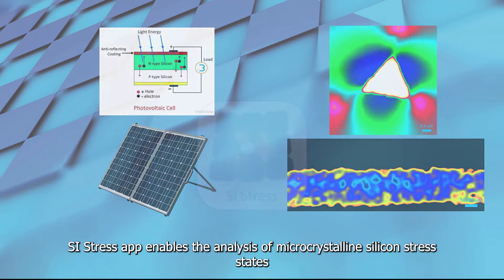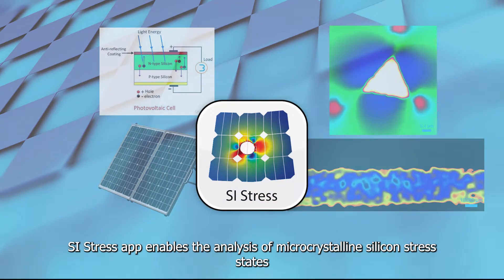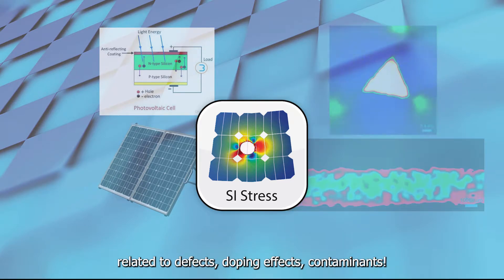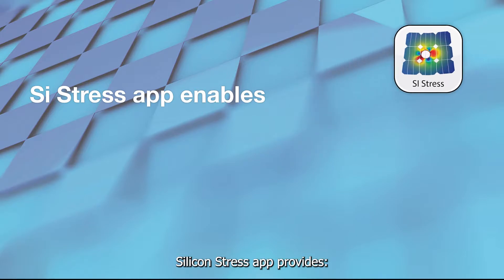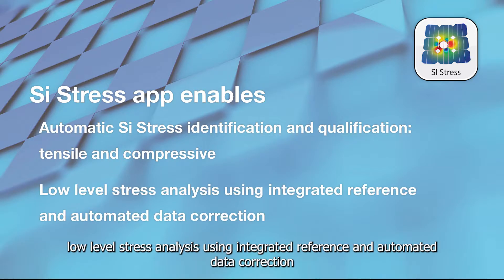Silicon Stress app enables the analysis of microcrystalline silicon stress states related to defects, doping effects, or contaminants. It provides automatic identification and qualification of both tensile and compressive stress, and low-level stress analysis using integrated reference and automated data correction.